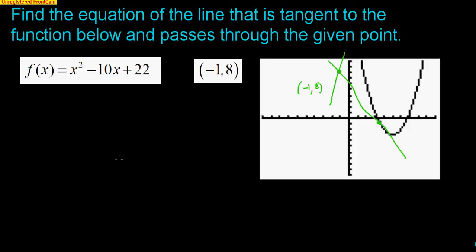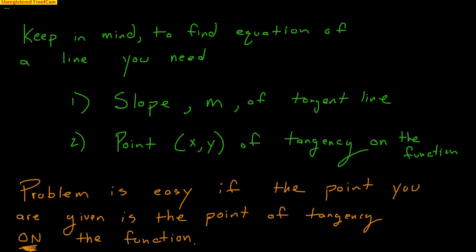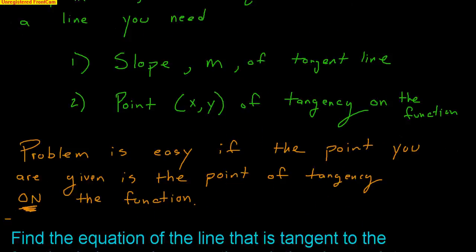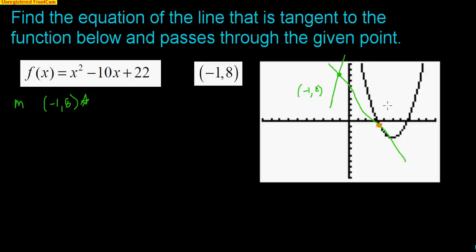To find the line, I need two things: slope m and a point. I already have the given point (-1, 8). What I need is the point of tangency, which lies on the function. I don't know what it is yet, so I'm just going to call it (x, f(x)) for now.